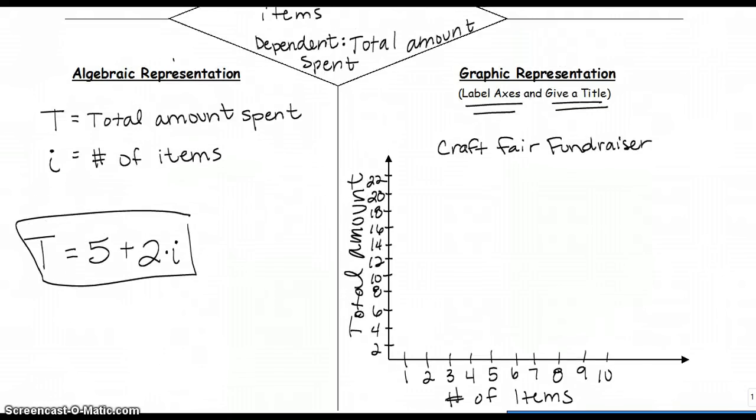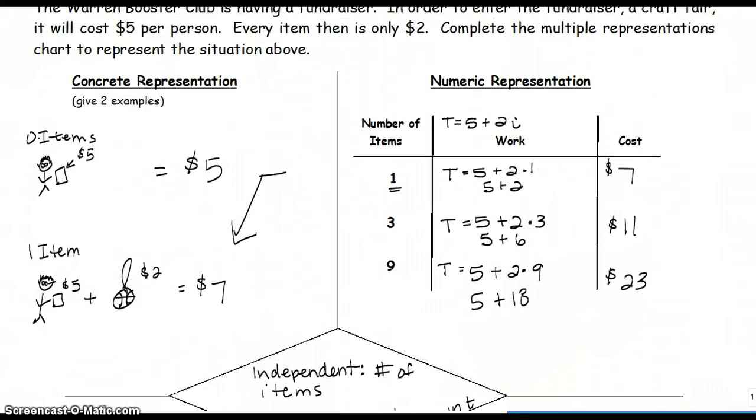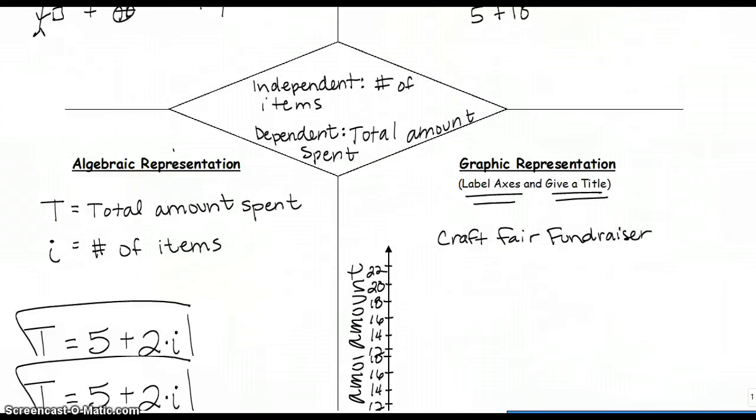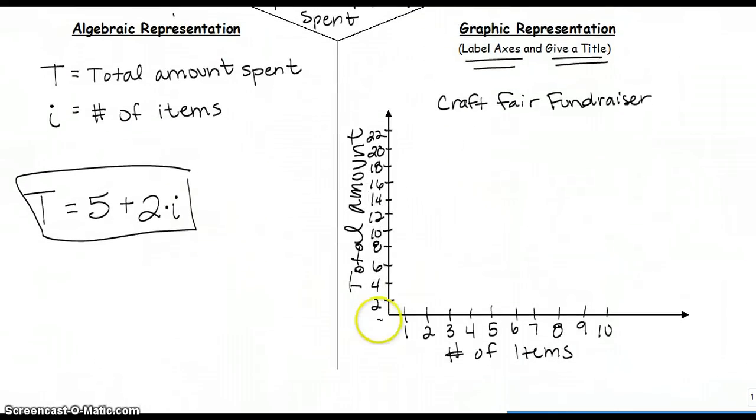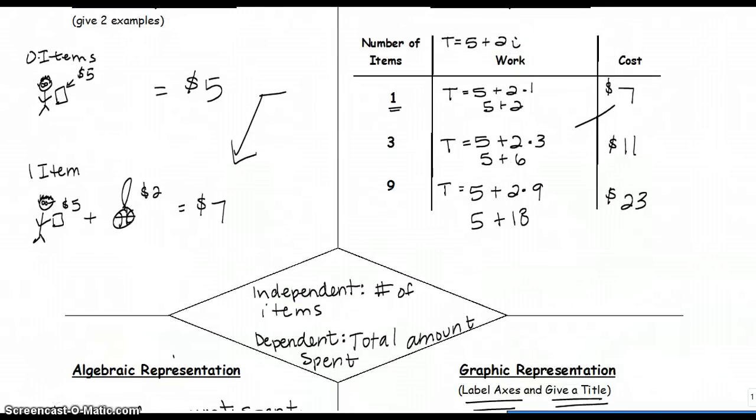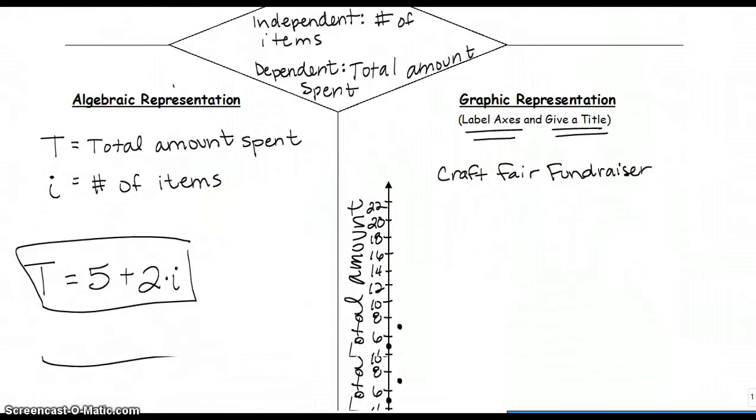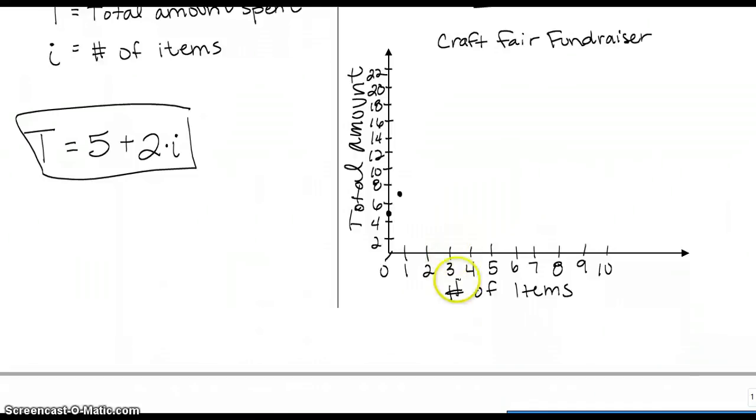We can take the information that we gathered here, both in the concrete representation and the numeric. Because, let's look at this. If you bought no items, how much money did you spend? Well, here's zero. Here's zero. You still spent $5 to get in. Where if you bought one item, it was $7. Then we jumped to three items for $11 and nine items for $23. Three items for $11 and nine items for $23.